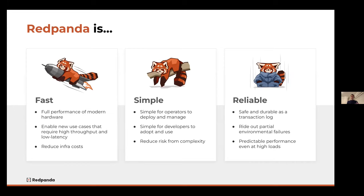Because Red Panda is so efficient, it can achieve equal or greater performance from fewer servers, which reduces your infrastructure costs. It's simple for operators to deploy and manage, and simple for developers to adopt. Red Panda fully supports the Kafka API, so out of the box it supports the entire ecosystem of Kafka-related tools — producers and consumer implementations, client libraries in various languages, and integrations with third-party systems will simply work with Red Panda. And because Red Panda ships in a single binary with no external dependencies, it reduces risk from operational complexity.